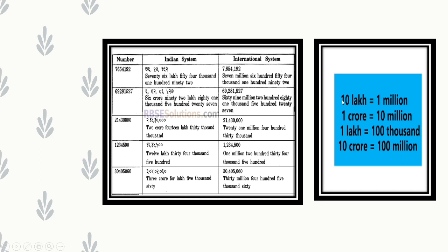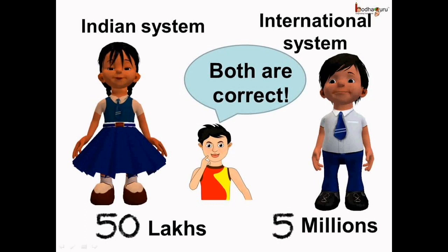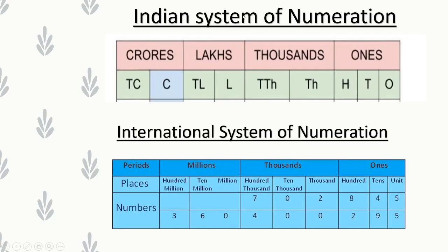Comparison between Indian system and International system: 10 lakhs in the Indian system is equal to 1 million in the International system. 1 crore in the Indian system is equal to 10 millions in the International system. 1 lakh in the Indian system is equal to 100,000 in the International system. For example, 50 lakhs in the Indian system equals 5 million in the International system — both are correct. In the Indian system we use the word 'lakhs', whereas in the International system we use the word 'millions'.